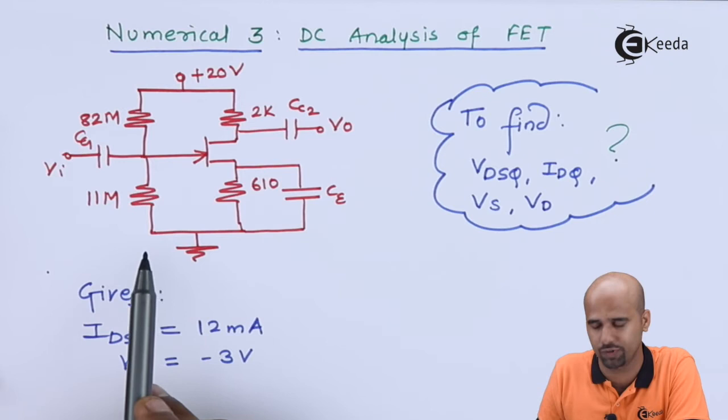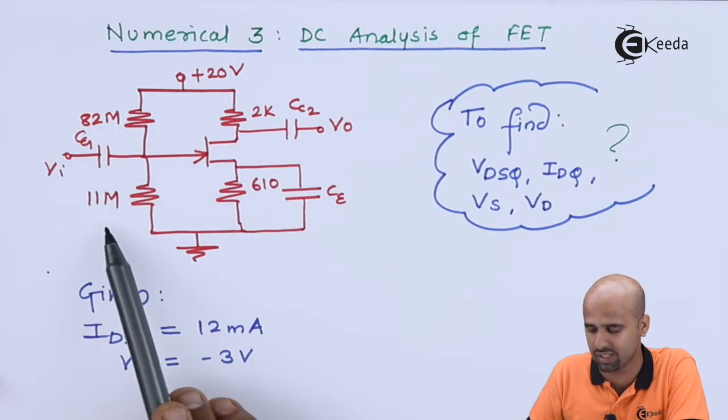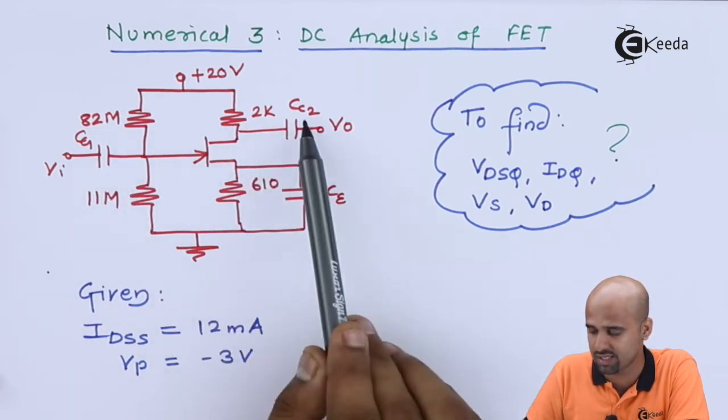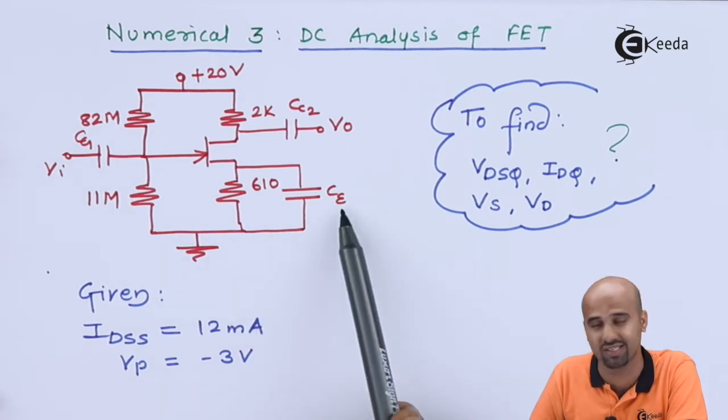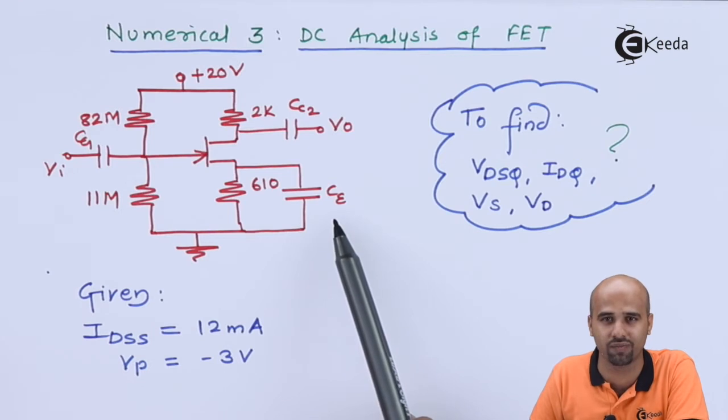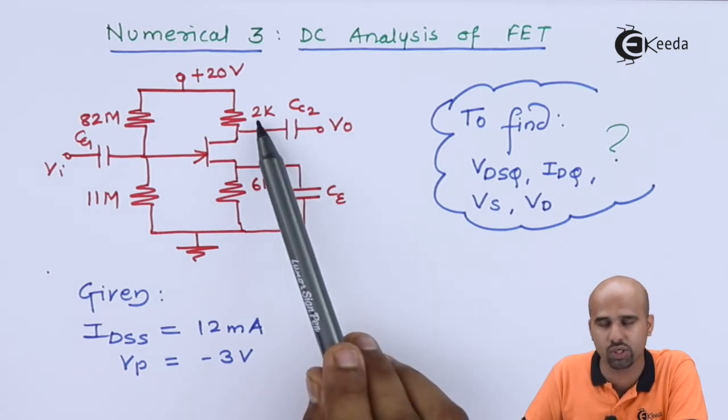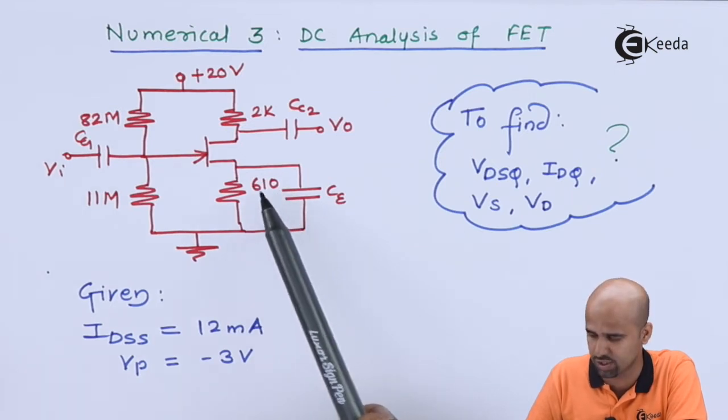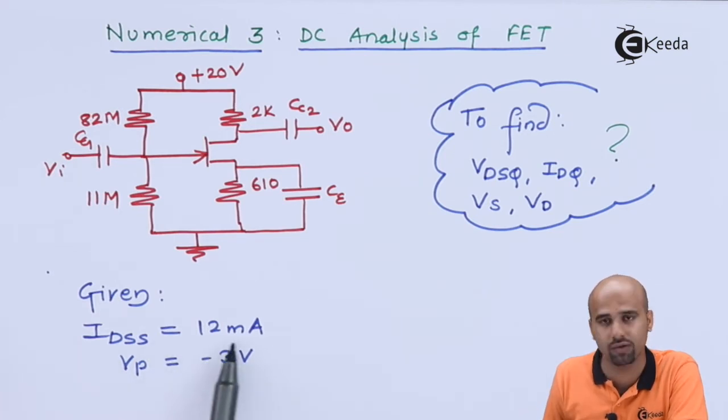In this circuit, we have two resistances at gate side. One is of 82 mega ohm and one is of 11 mega ohm. Three capacitors are connected. One is CC1, CC2, two coupling capacitors. CE is a bypass capacitor. I can give the name current as CS as well, which is more appropriate for FET. 2K is your drain resistance, 610 ohm is your source resistance. 20 volts is applied external potential at drain side. Given values: IDSS = 12 milliampere and VP = -3 volts.